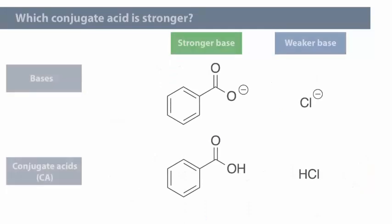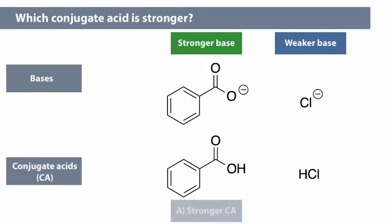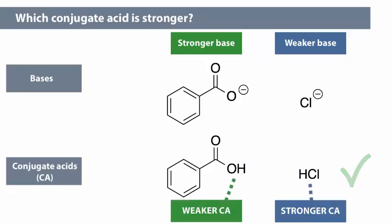For the stronger base in a pair, is its conjugate acid stronger or weaker than the other conjugate acid? If one base is stronger than another one, its conjugate acid is weaker. A stronger acid has a weaker conjugate base, and vice versa.